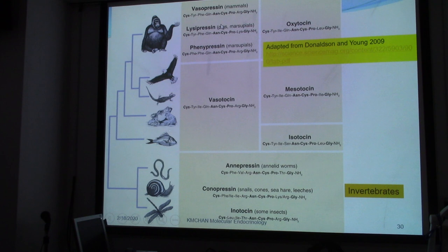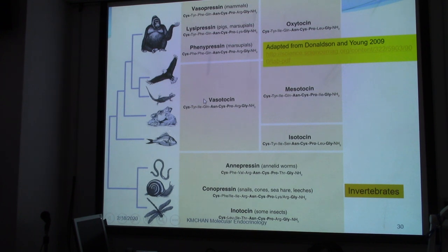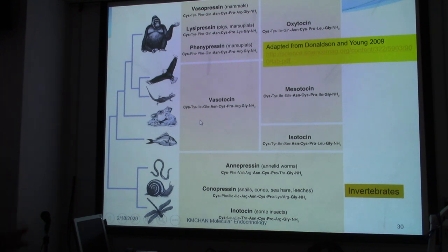If you have this basic background of all these different kinds of oxytocin, mesotocin, isotocin, and so on, we can perhaps also demonstrate that the evolution of these peptides would bring about more complicated behaviors, including sexual behavior, maternity or paternity, and so on. These are all animal behaviors.